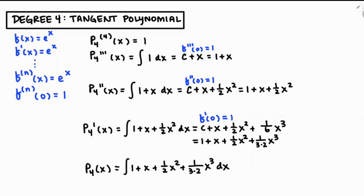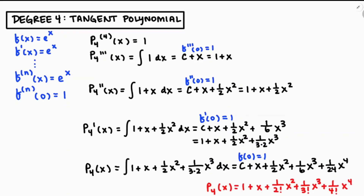Writing one-sixth as 1 over (3 times 2) in the denominator helps reveal the bigger picture. Taking the final anti-derivative gives p₄(x) equals c plus x plus one-half x squared plus one-sixth x cubed plus one-twenty-fourth x to the fourth. The sequence 1, 1, 2, 6, 24 in the denominators may look familiar. Setting c equal to 1, we can write this as 1 plus x plus x²/2! plus x³/3! plus x⁴/4! — because each anti-differentiation step drops a factorial into the denominator.